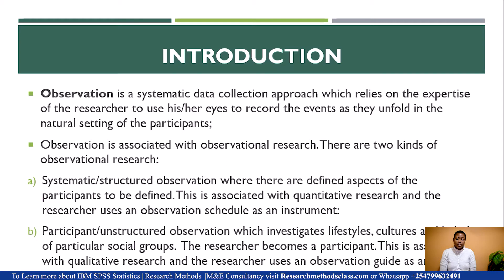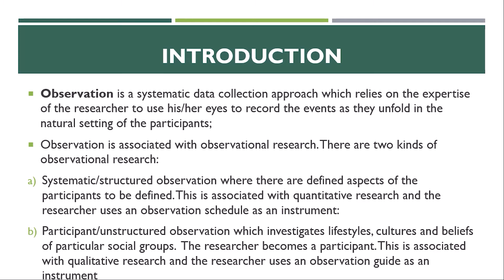Observation is associated with observational research, and there are mainly two kinds. The first is systematic or structured observation, where there are defined aspects of the participants to be observed. This is associated with quantitative research, and the researcher uses an observation schedule as an instrument. The second is participant or unstructured observation, which investigates lifestyles, cultures, and beliefs of particular social groups. Here, the researcher becomes a participant, making it associated with qualitative research, and the researcher uses an observation guide as the instrument.